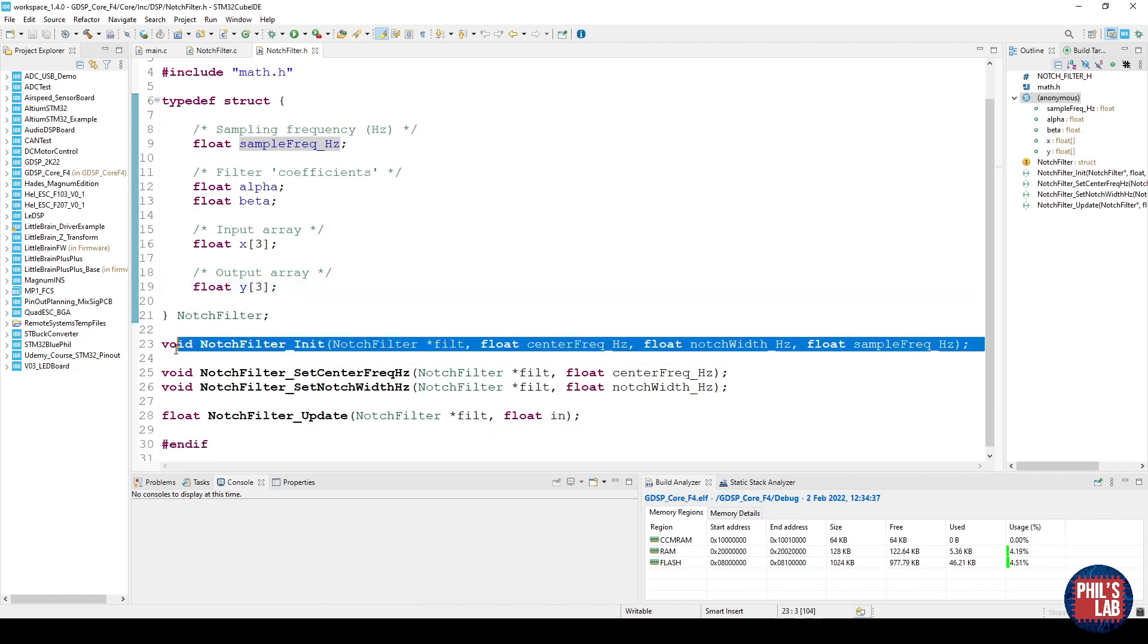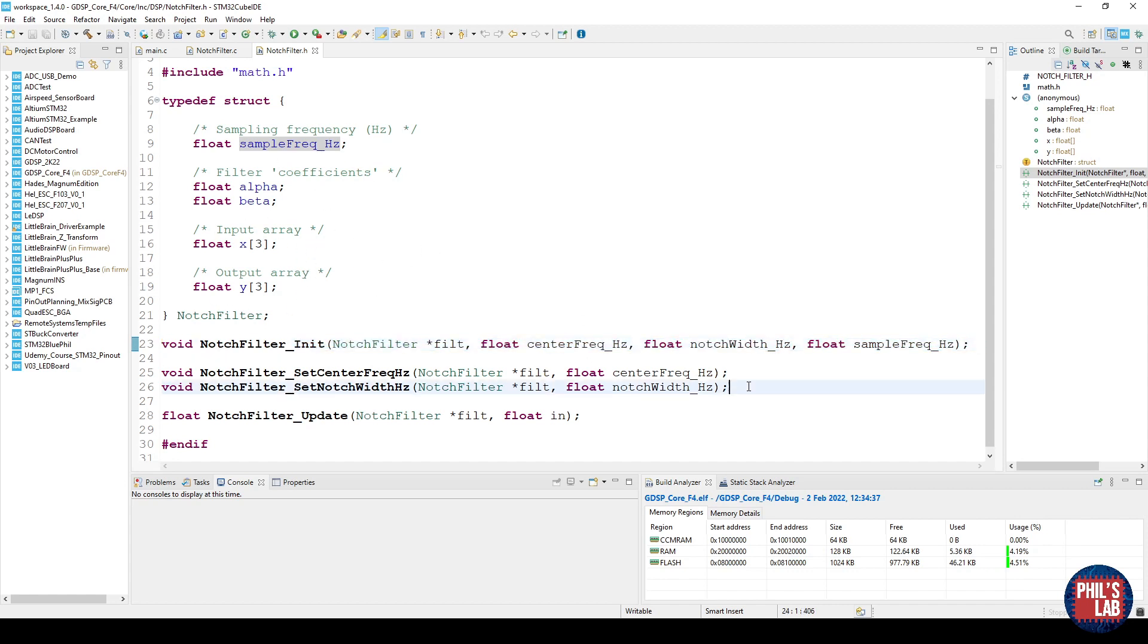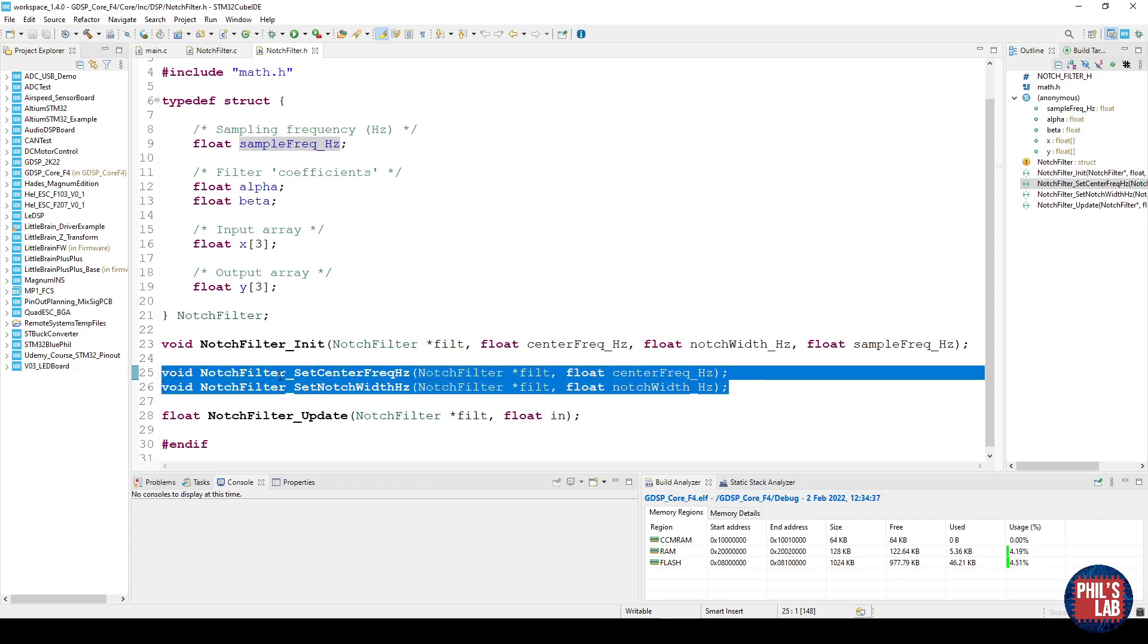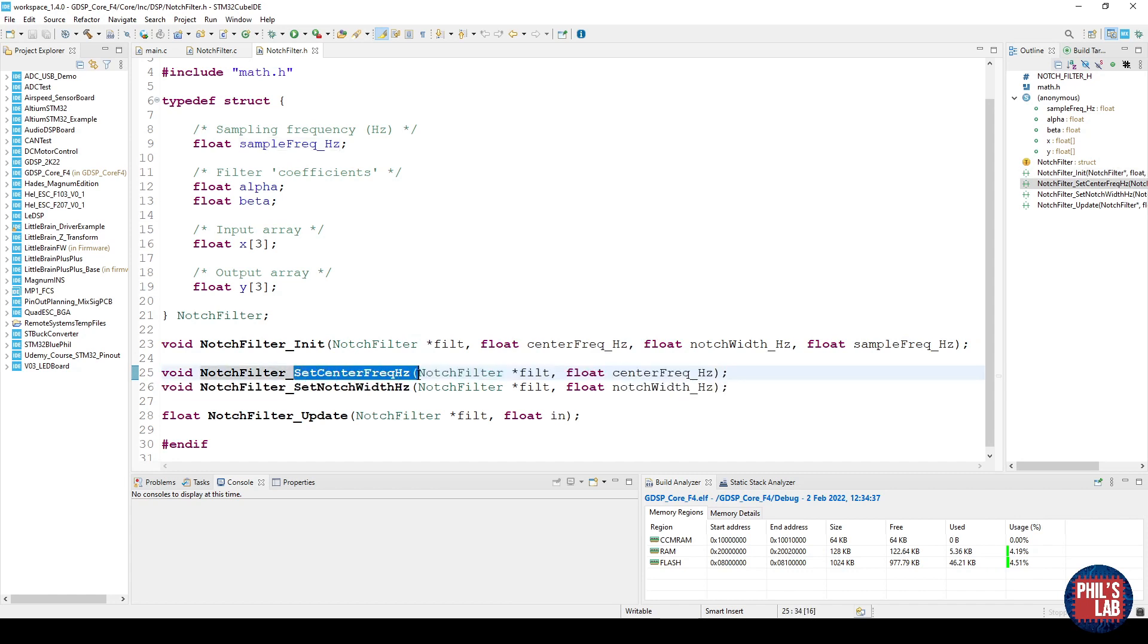As usual we have an initialization function which computes our filter coefficients, set the sampling frequency and clears our input output arrays. Then because we want to make this filter variable, I've created two new functions, one is to set the center frequency and this essentially recomputes the filter coefficients for a given center frequency and this one over here which is set notch width which also recomputes the filter coefficients depending on the notch we selected.